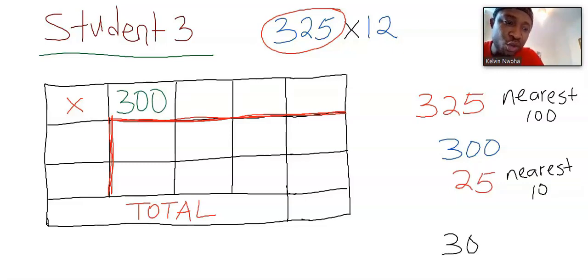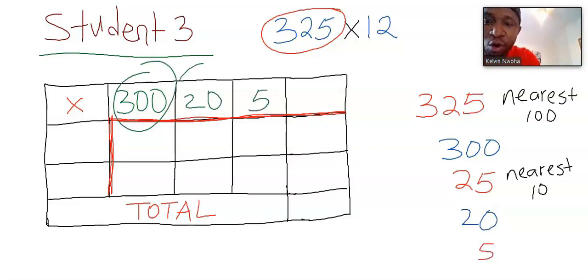Hence, I will have 20, and I'm left with 5. I'm going to write the 20 here, and the remaining 5 is here. When you add them up, it must give you back whatever you have here.